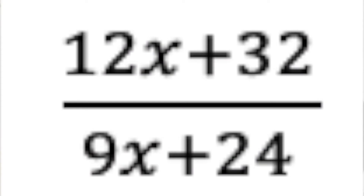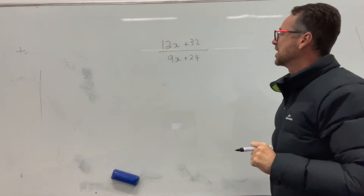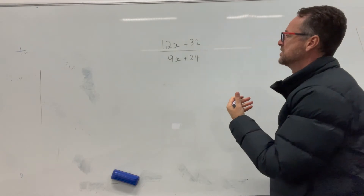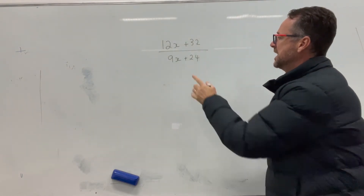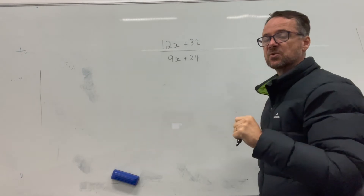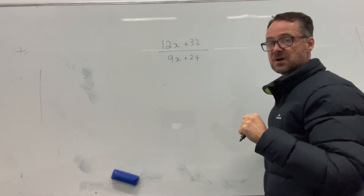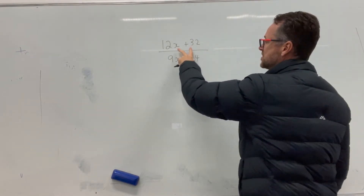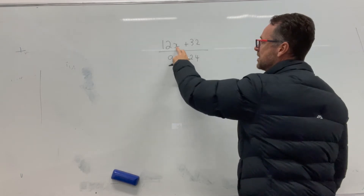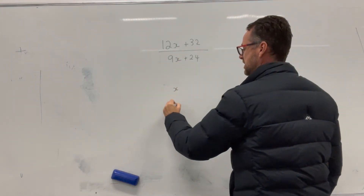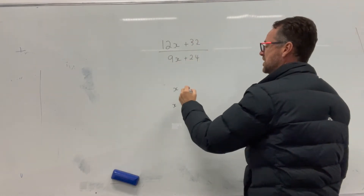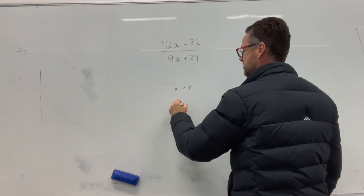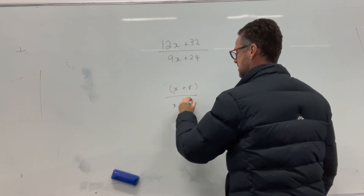Here we have an expression on top and bottom of a fraction and we want to cancel. But we can't cancel because we've got addition — we need multiplication in order to cancel. So what we're looking for is to factorise. We're looking for something common to both expressions, and we can see that x is common to both. We can also see that 8 goes into both numbers.